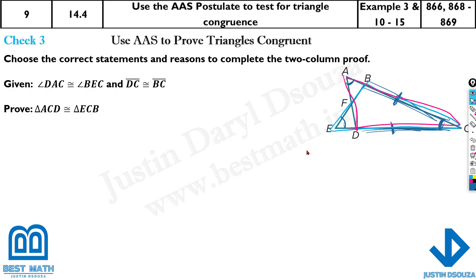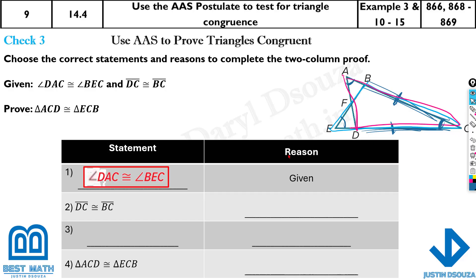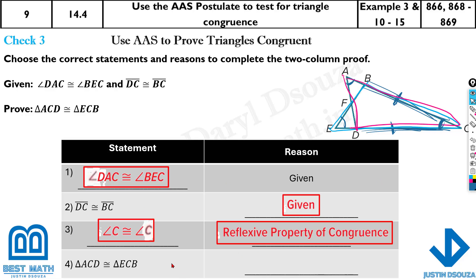So we can say angle C equals angle C by reflexive property. Angles DAC and BEC are given. The side DC and BC are given. Angle C and C — that's the reflexive property. Therefore, the triangles are congruent because of the AAS postulate.